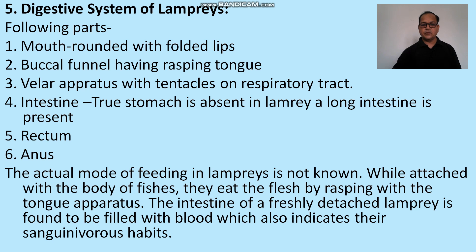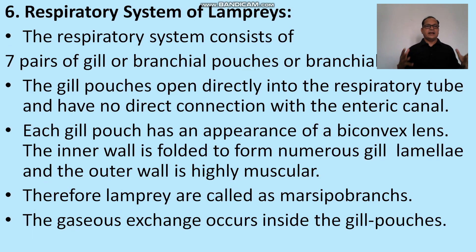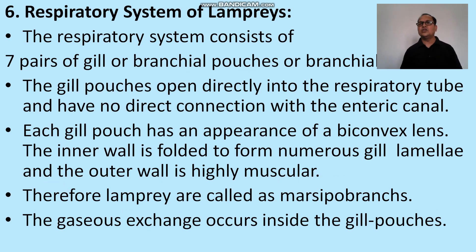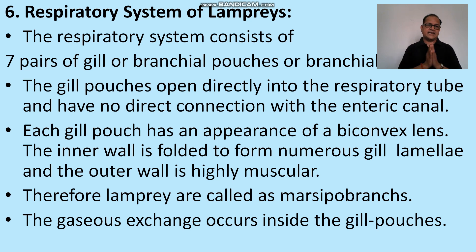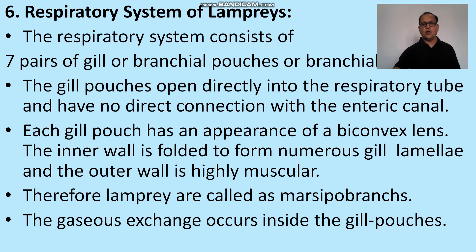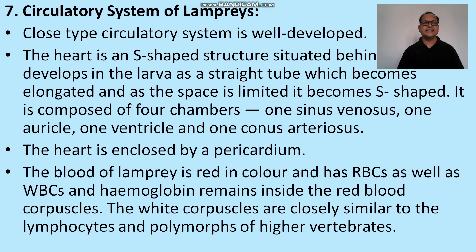Respiratory system: it consists of seven pairs of gill pouches. There is no operculum, and the gills are pouch-like structures — therefore they are called marsipobranchs. Each gill pouch opens to the exterior by a convex line, and the inner wall is folded by numerous gill lamellae, while the outer wall is highly muscular. Gaseous exchange occurs inside the gill pouches.